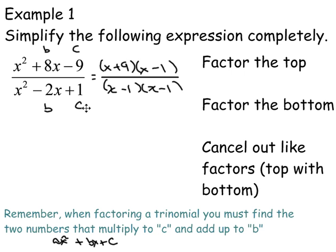So two numbers that multiply to C and add up to B. And then the final step says cancel out like factors. So this x minus 1 will cancel out with one of these x minus 1's. And the final answer is x plus 9 over x minus 1.